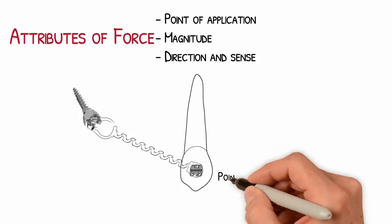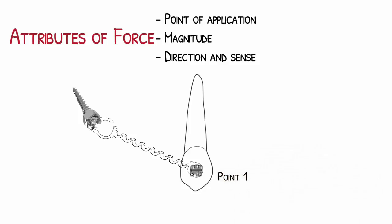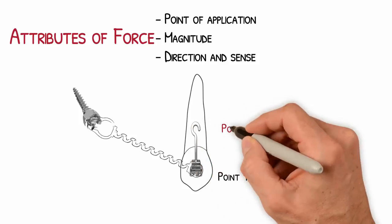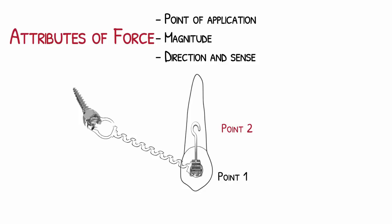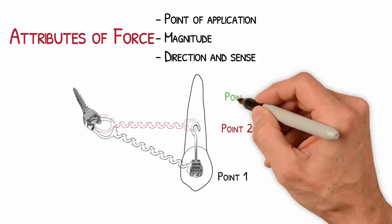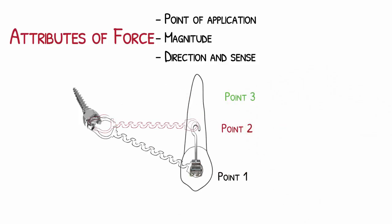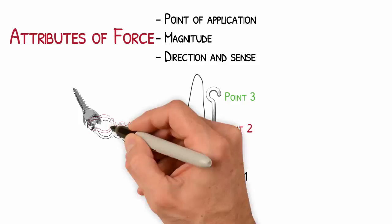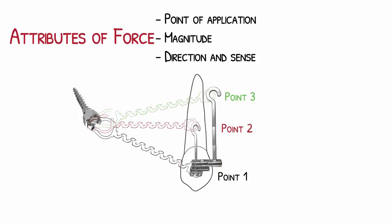For example, you can choose to apply a force directly to a bracket, which we will call point one. Or you can apply your force on a small piece of wire attached to the bracket - in this case, we will have point two. Or you can choose to connect your spring to a great extension of wire attached to the bracket, and here we will have point three. Intuitively, we already know that these three situations will cause different movements.